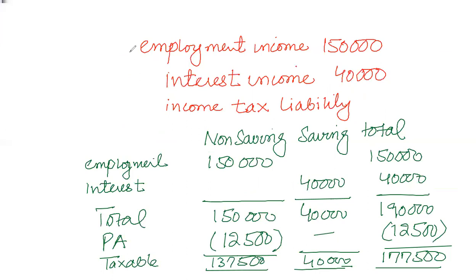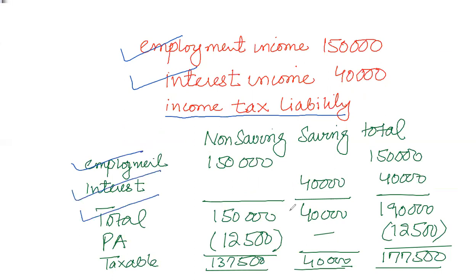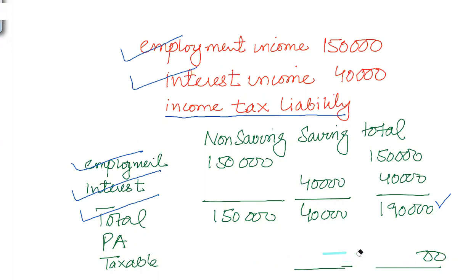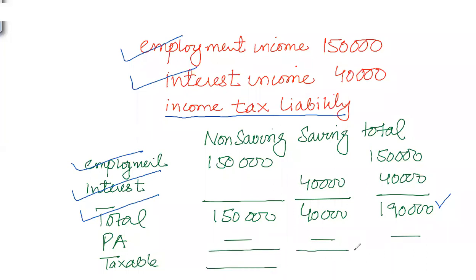Another question. We have employment income of £150,000 and interest income of £40,000; calculate income tax liability. A pro forma is set up: employment income £150,000, interest income £40,000, total income £190,000. As this is more than £100,000 — and in fact exceeds £125,000 — personal allowance is not applicable. The taxable income is the same as total income, £190,000. The person falls in the additional rate tax band.